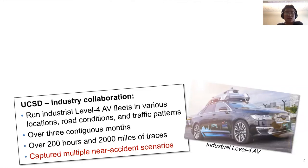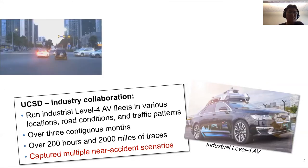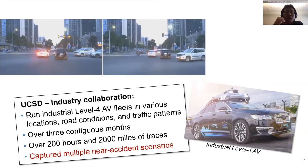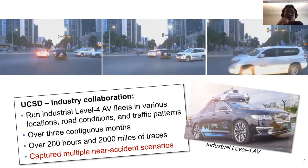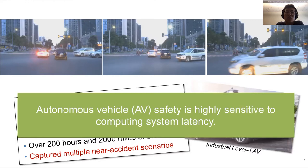This is a UCSD and industry collaboration. We run industrial Level 4 AV fleets in various locations, road conditions, and traffic patterns. We drove over three continuous months, collecting over 200 hours and 2,000 miles of data, and captured many near-accident scenarios. In one case, our autonomous vehicle is crossing an intersection where the traffic light is flashing yellow — meaning treat it as a stop sign — but a white SUV crosses from right to left, ignoring the traffic light. If our AV cannot see this SUV in real time and perform emergency braking, a collision will definitely happen. We claim that AV safety is highly sensitive to computing system latency.